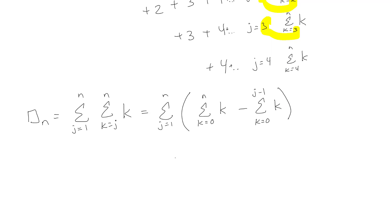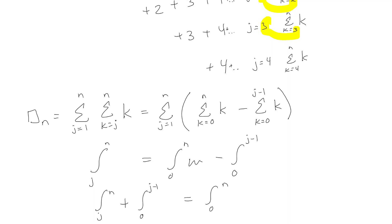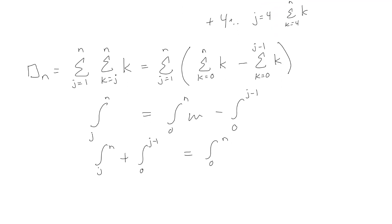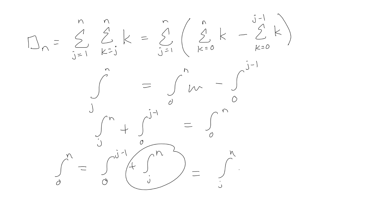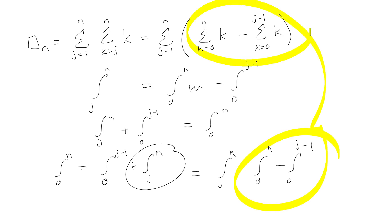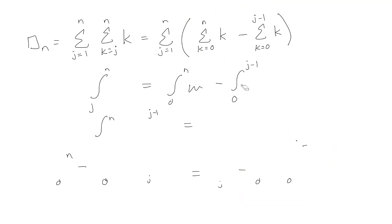Basically what I can do is, instead of going from j to n on the inside, I can go from 0 to n and subtract off the first j−1 terms. This is like integrals: I can integrate from 0 to n and subtract off 0 to j−1, which is equivalent to integrating from j to n. So from 0 to n equals from 0 to j−1 plus j to n. A lot of times we have more experience with calculus than summations, so thinking in those terms can help summations make more sense.